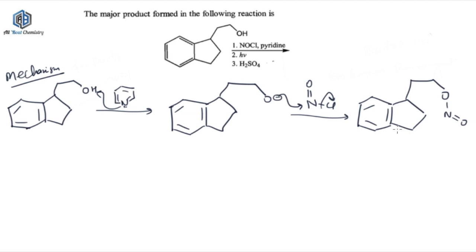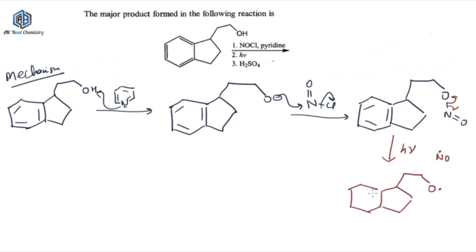Next we are going to introduce hν — that means you are going to shine light on it, so now the photochemical reaction will be done. What will happen here is homolytic fission — homolytic fission of the weakest bond, which is the oxygen-nitrogen bond. A radical will be formed on oxygen and a NO radical will be liberated. As you can see, this is oxygen, and this is your alpha carbon, beta carbon, gamma carbon, and delta carbon, which has a hydrogen.